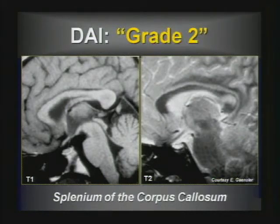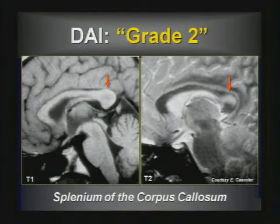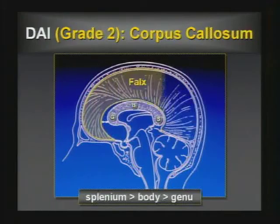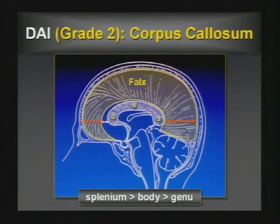On T1-weighted imaging a bulbous splenium is visible, and on T2 sagittal images there's a little rind of sparing in the central fibers of the splenium. This is not a direct contusion but shearing forces when the brain is translationally moved. The splenium is injured because the falx — Latin for sickle — is narrow anteriorly and broad posteriorly, abutting the splenium posteriorly, making shearing forces greater posteriorly than anteriorly.